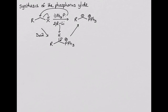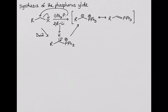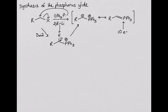While it might seem that a phosphorus ilid is a very unstable compound, having a negative charge and a positive charge on neighboring atoms, it actually is fairly stable because of resonance. The resonance structure involves the contribution of the negative charge and the lone pair of electrons on carbon to the positively charged phosphorus to form a double bond. Notice that this double bond requires the phosphorus atom to have more than an octet of electrons, which is possible because phosphorus is in the third row of the periodic table, and third row and lower elements can have more than eight electrons in their outer shell.